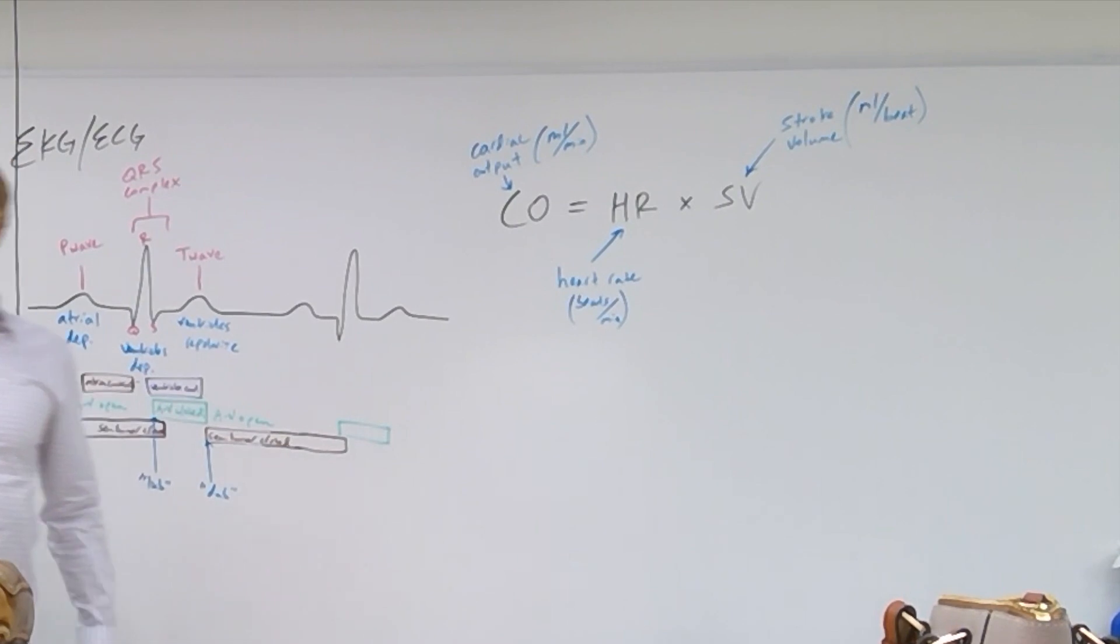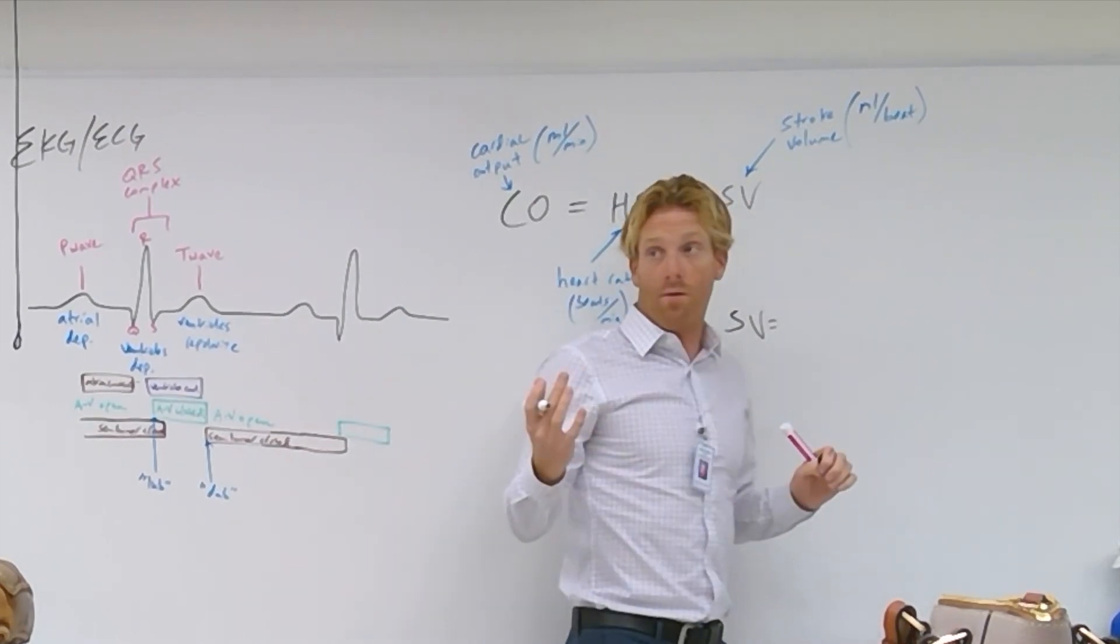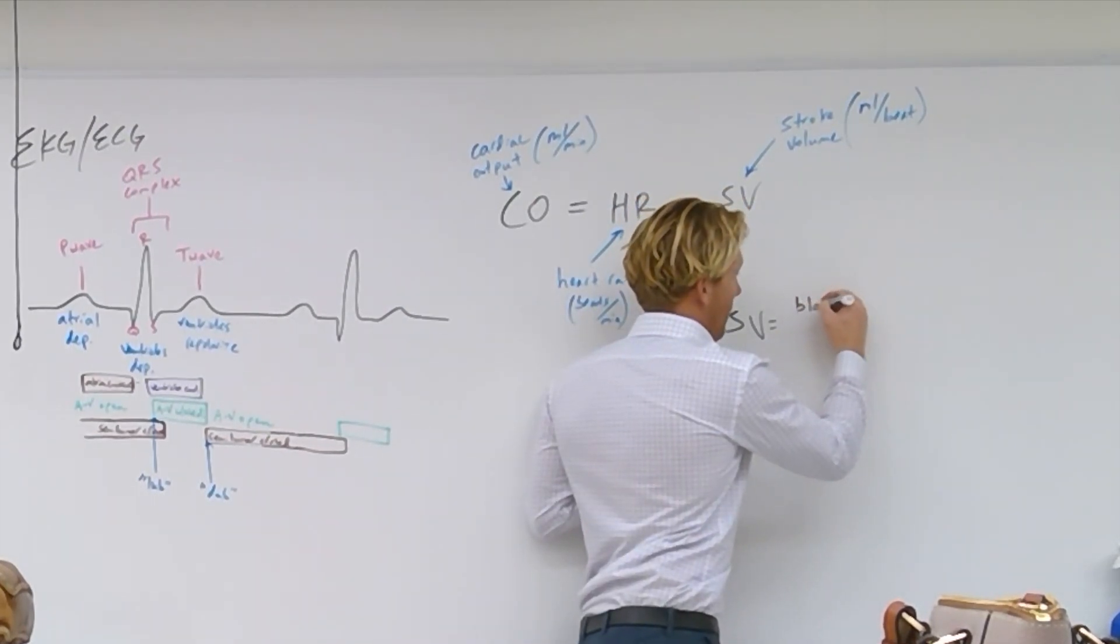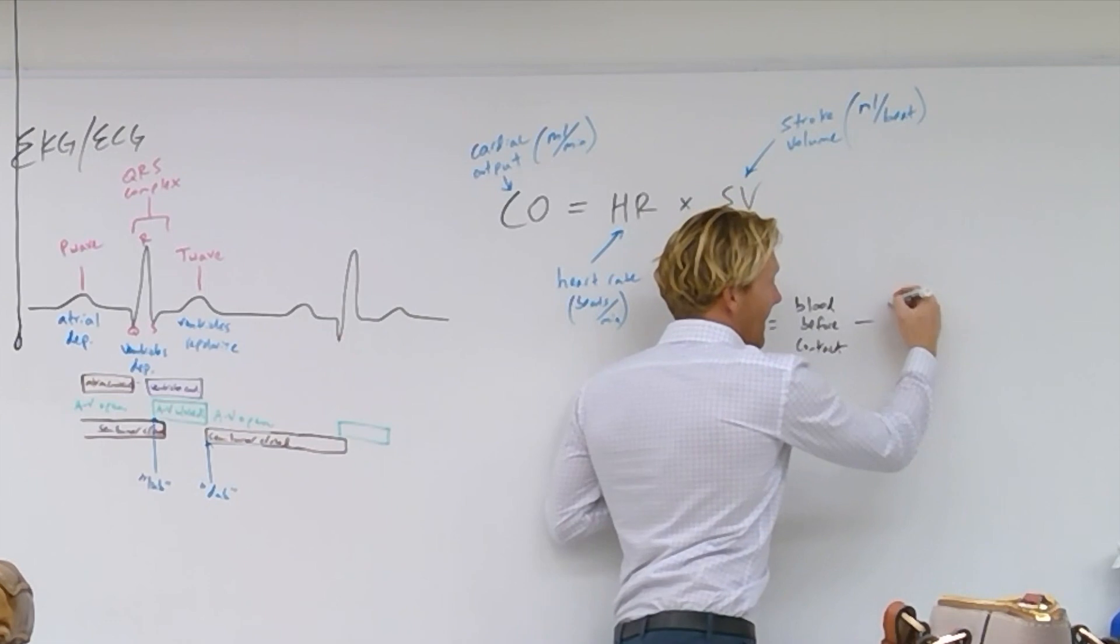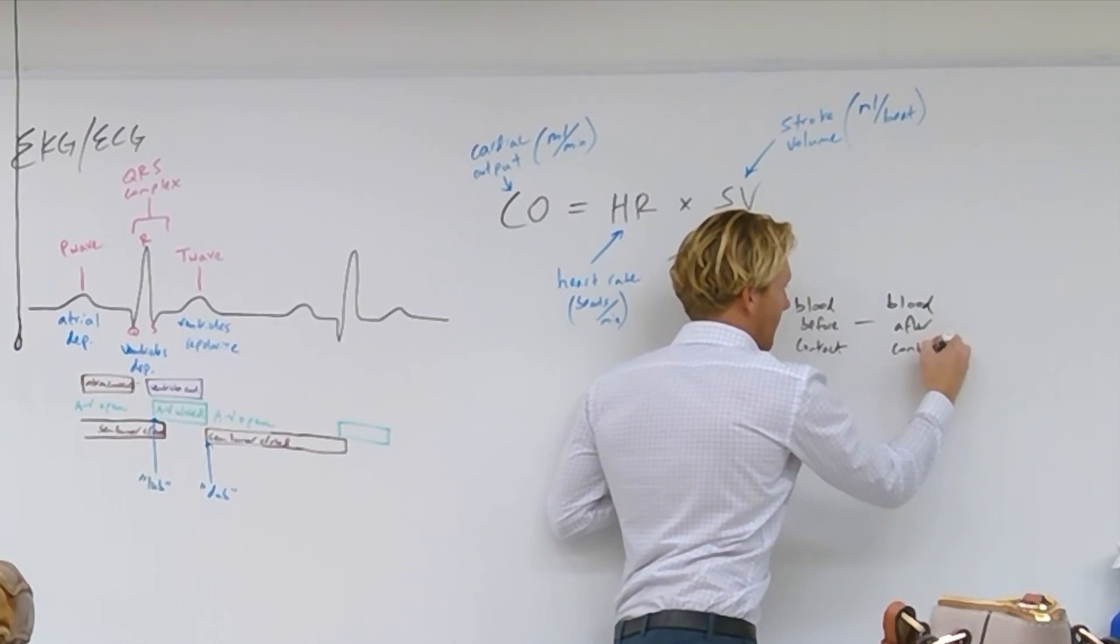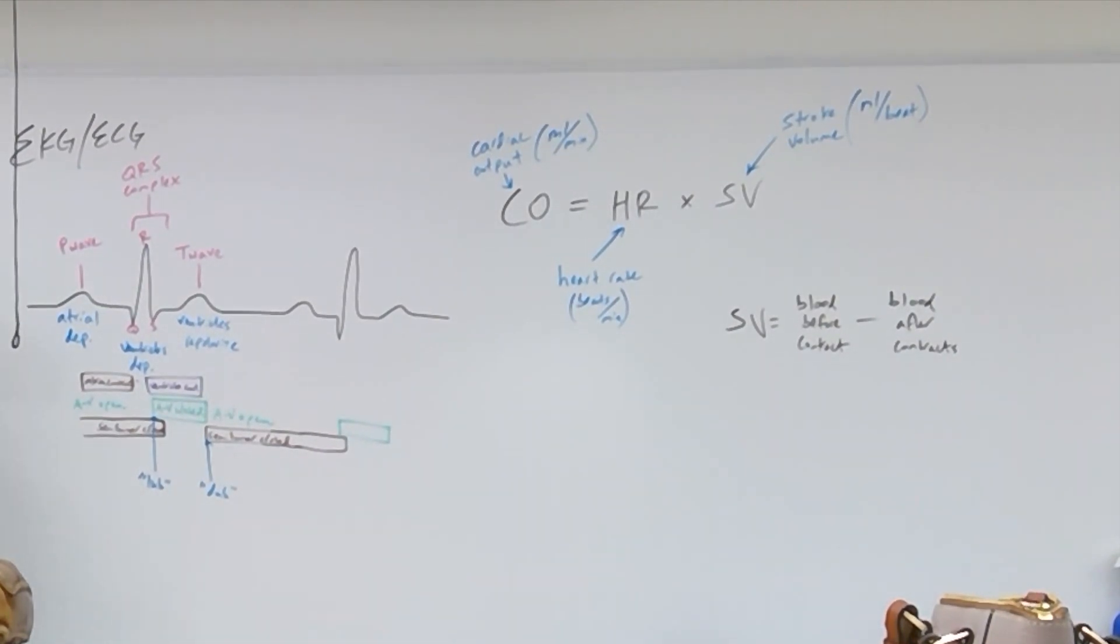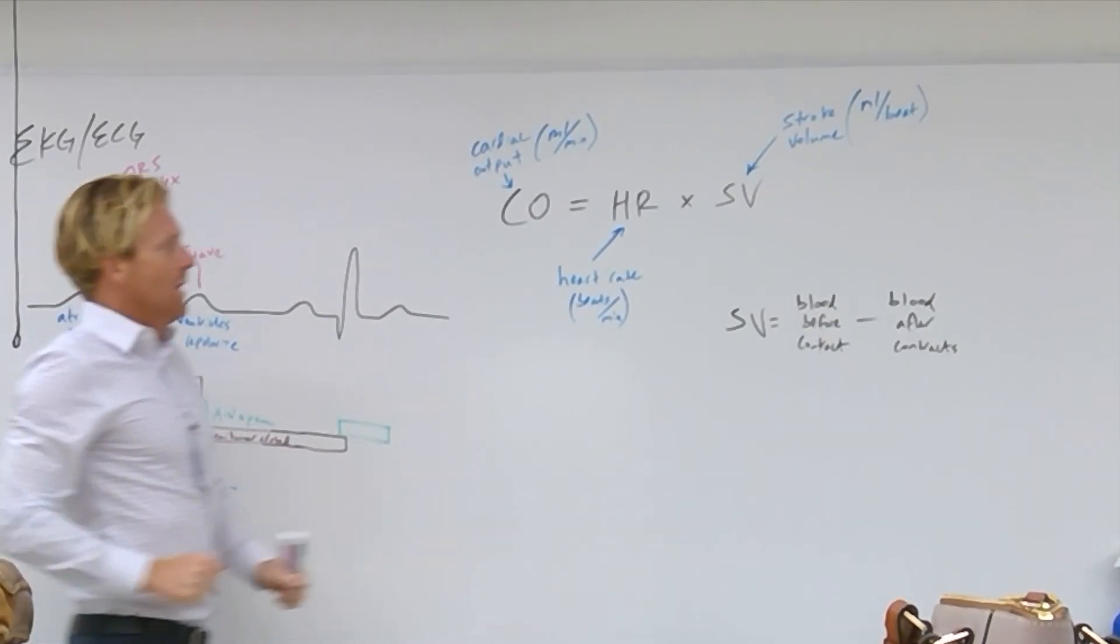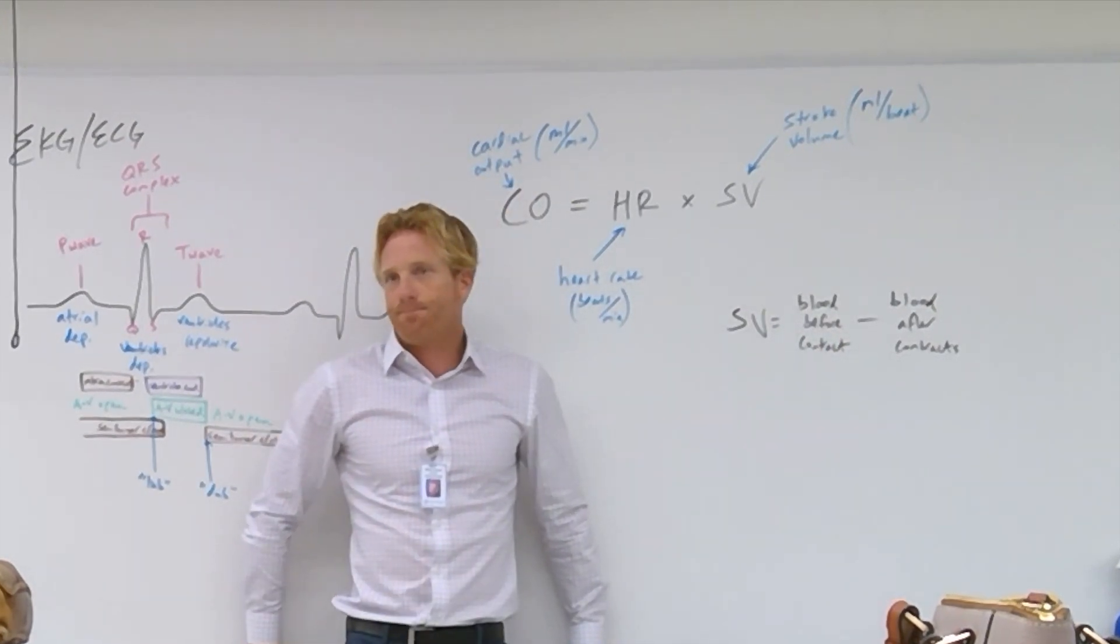And the equation for stroke volume is this. It's the amount of blood in the heart before it pumps, so blood before, subtracted by the amount of blood after it contracts. I mean, first off, when the heart beats, do you think all the blood in the ventricles are completely squeezed out? No, there's quite a bit of blood that's left in there. Like, 25% of the blood remains in the ventricles. Because they don't just empty completely. So, stroke volume is the blood before it contracts, how much is in there before, minus how much blood is in there after it contracts.